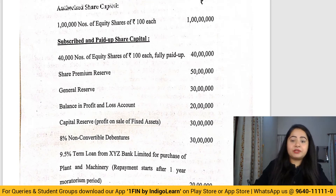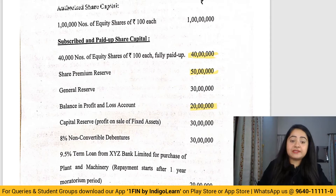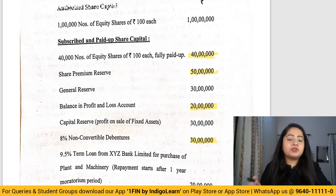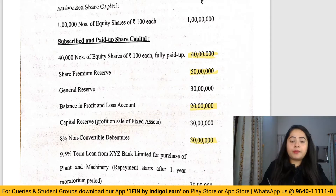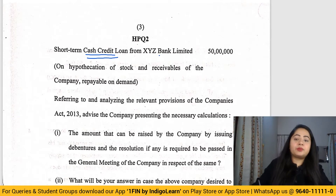In this question, a lot of numbers are given. The equity share capital is 40 lakh rupees, security premium is 50 lakh rupees, general reserve 30 lakhs, profit and loss account is 20 lakh rupees, capital reserve 30 lakhs, non-convertible debentures already with the company are 30 lakh rupees, a term loan from a bank of 20 lakh rupees, and a cash credit (temporary loan) of 50 lakh rupees.